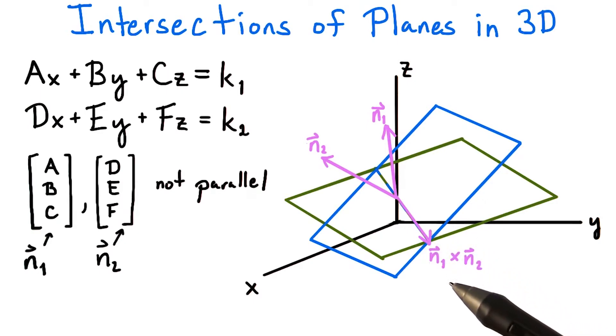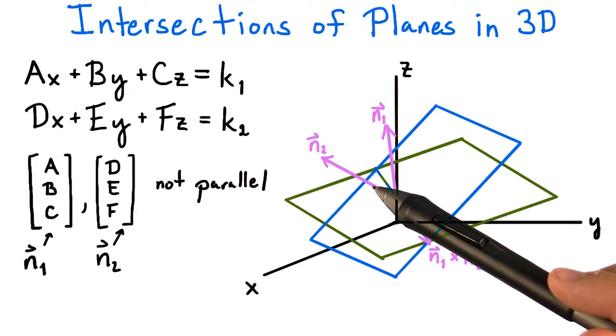Consider the cross product of these two normal vectors, n1 and n2. Since the two normal vectors are not parallel, their cross product will not be zero. Also remember that n1 cross n2 will be orthogonal to both n1 and n2.